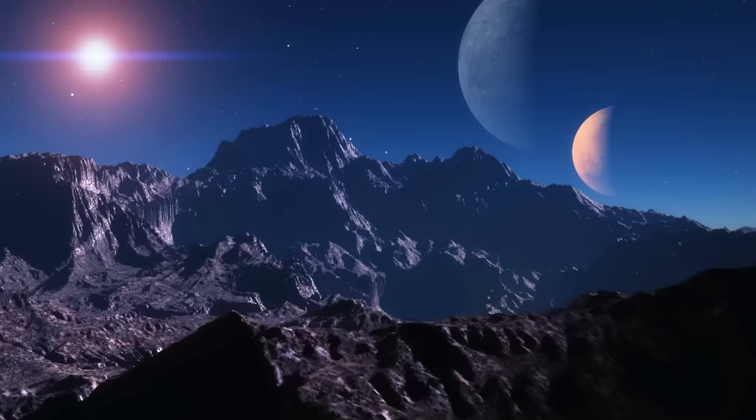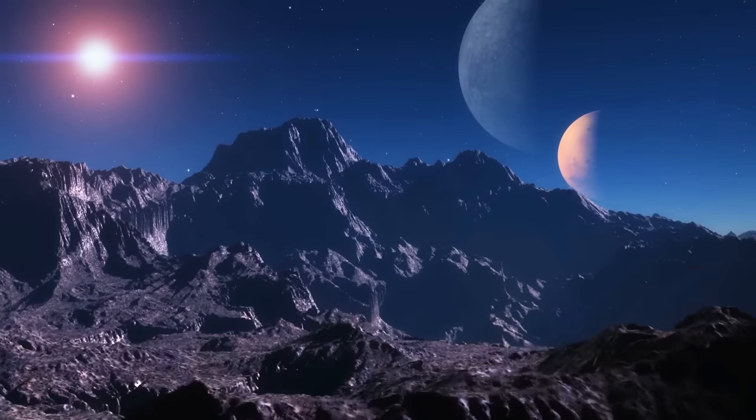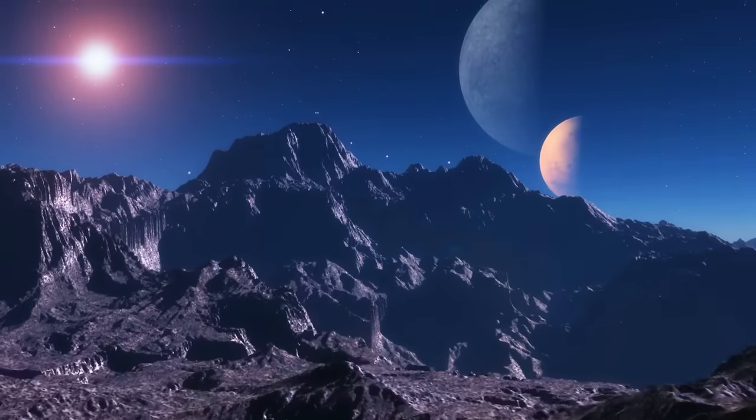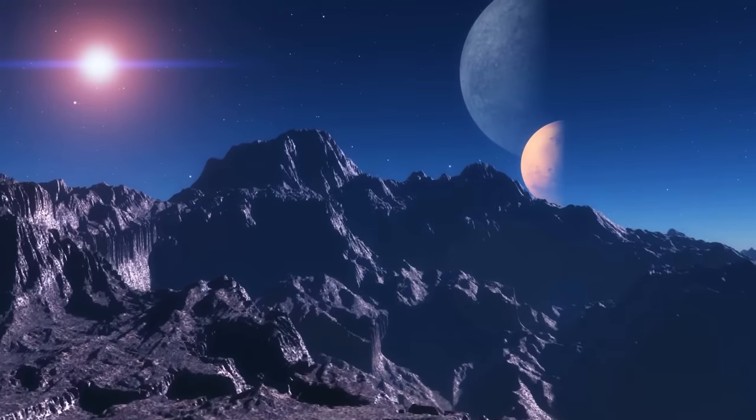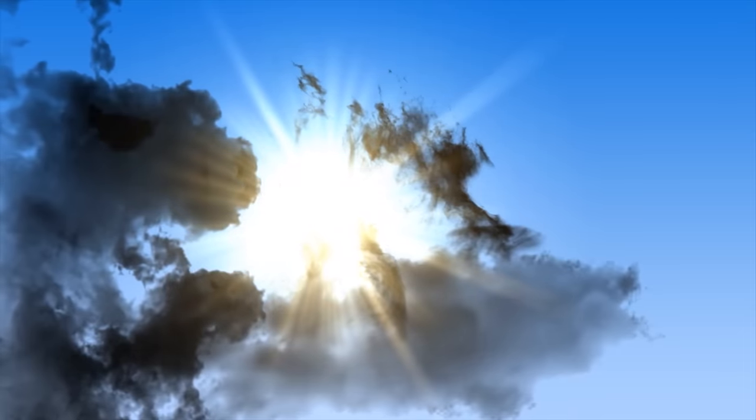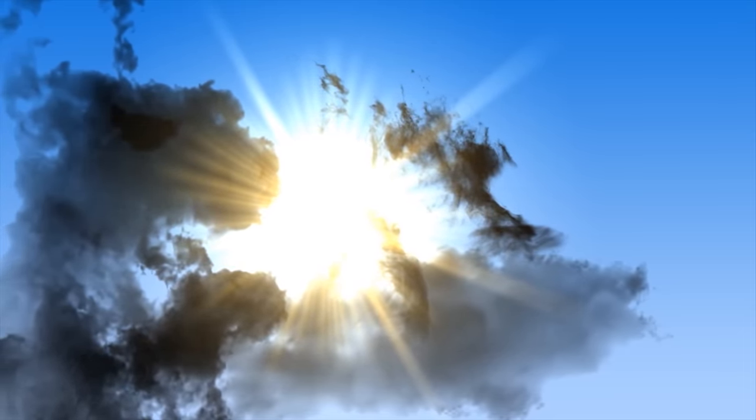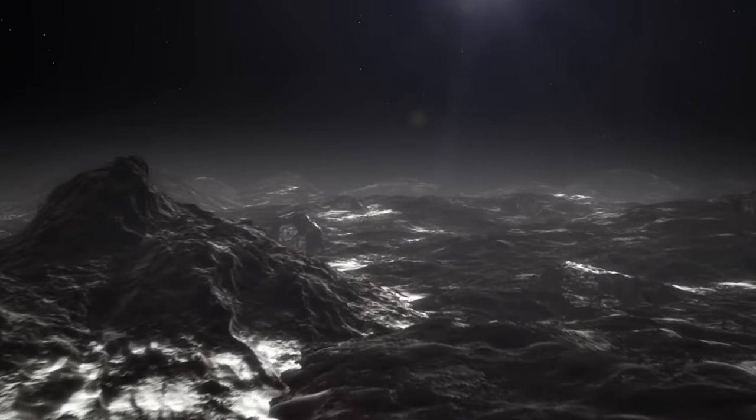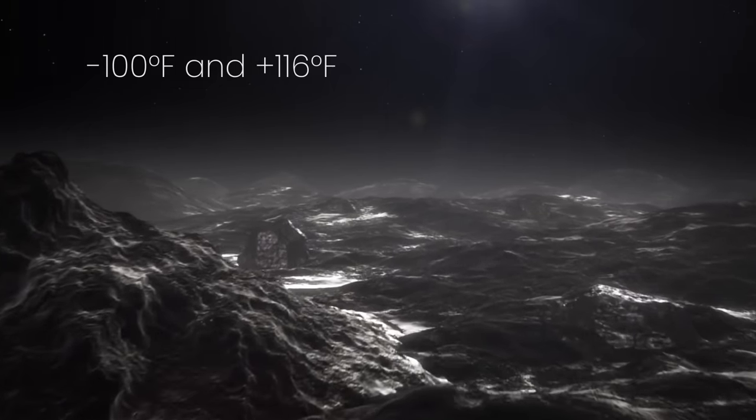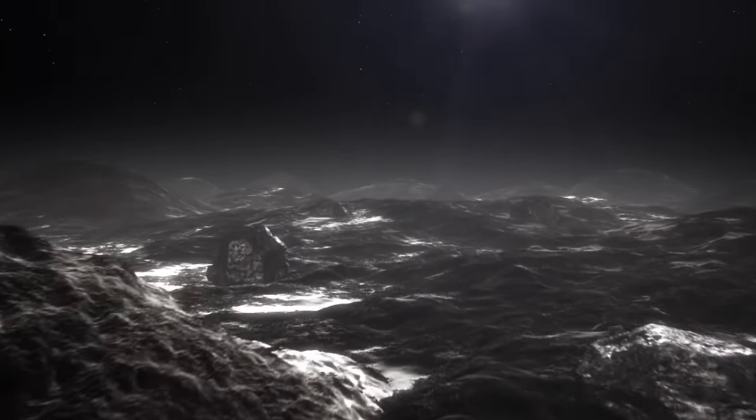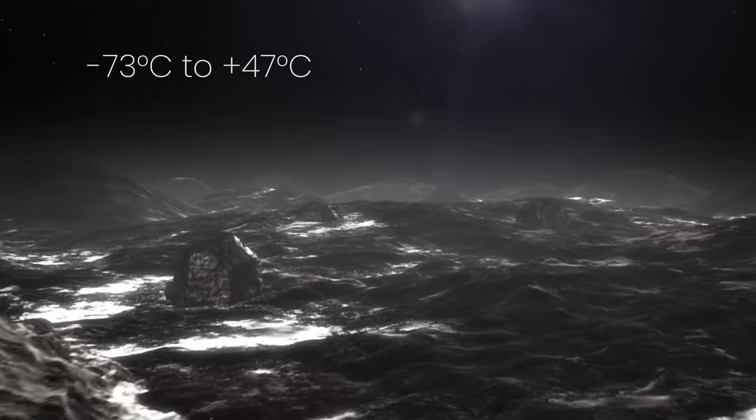On top of all of this, despite being cooler, red dwarf stars tend to be more active than Sun-like stars. Thus, the planets may be exposed to higher quantities of damaging ultraviolet radiation than what we're used to here on Earth. Because of this, surface temperatures can range between minus 100 and 116 degrees Fahrenheit, or minus 73 to 47 degrees Celsius.